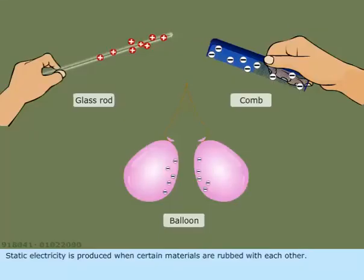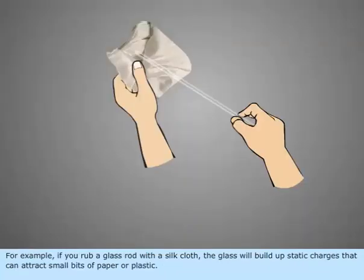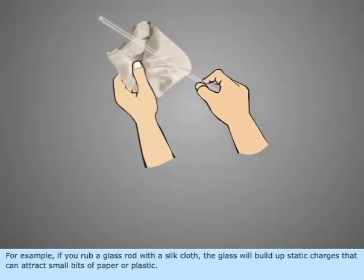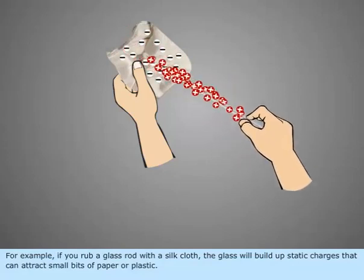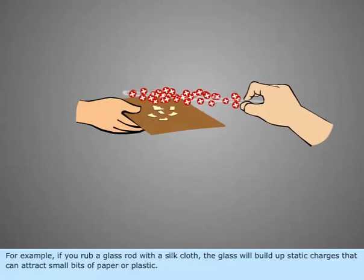Static electricity is produced when certain materials are rubbed with each other. For example, if you rub a glass rod with a silk cloth, the glass will build up static charges that can attract small bits of paper or plastic.